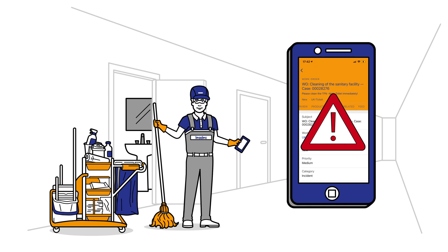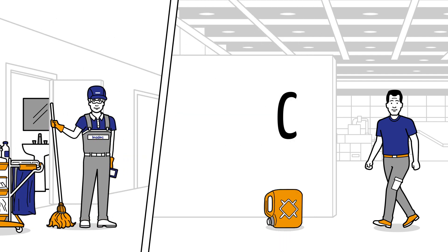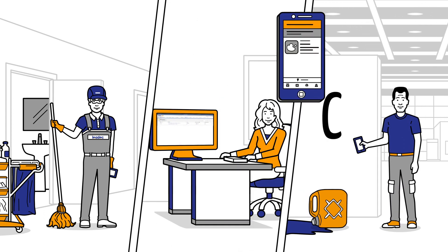What has happened? Paul is in a rush. There's a problem with one of the machines. On his way, Paul notices that a container of waste oil has tipped over. Paul quickly uses his smartphone to create a case in the customer portal.